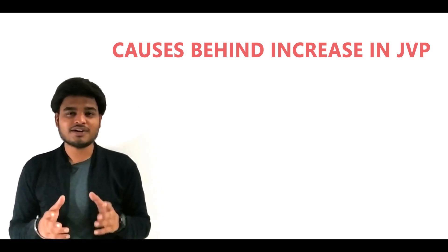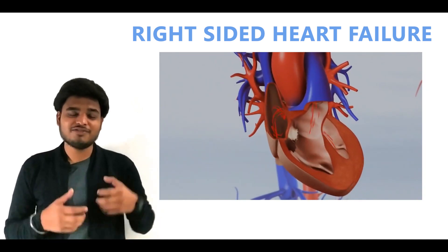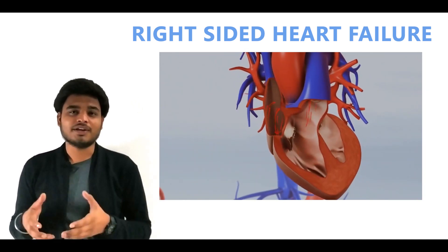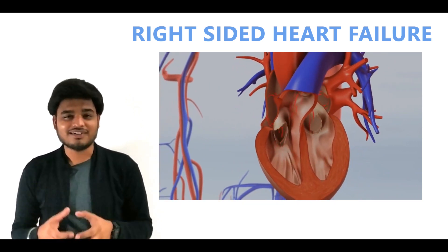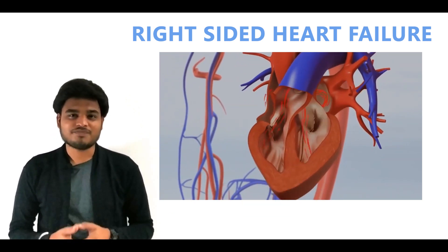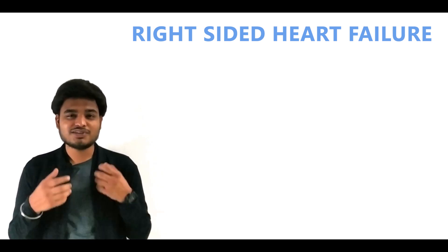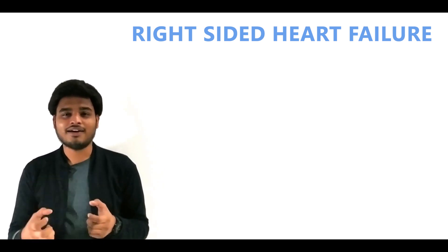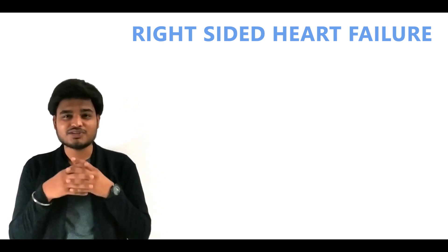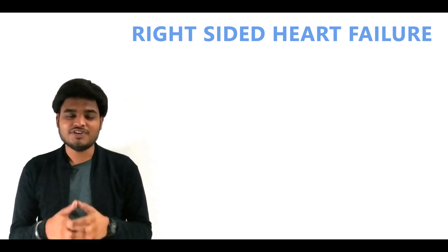Number one: right-sided heart failure. Our left ventricle has to pump oxygenated blood to the whole body, and the right ventricle has to carry deoxygenated blood towards the lungs for purification. In right-sided heart failure, there is accumulation of blood inside the lungs, so the right ventricle has to work harder and harder. As a result, there is accumulation of blood inside veins, which elevates jugular venous pressure.